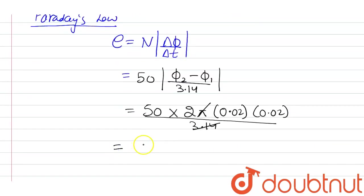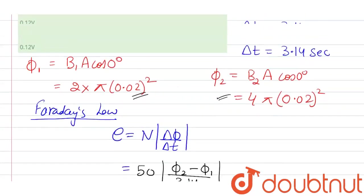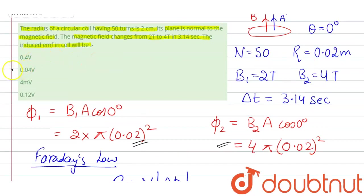It will be equal to 400 into 10 to the power minus 4, that means it will be equal to 0.04 voltage. So that means the correct answer of this question will be option 2. Thank you.